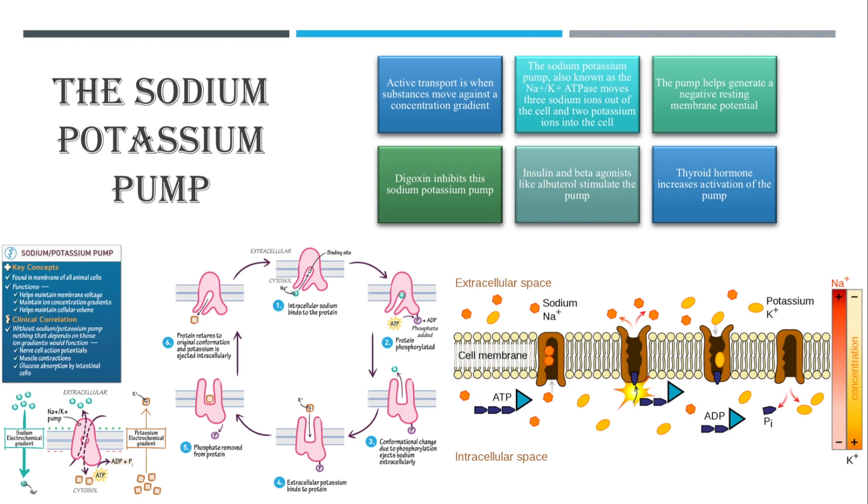In this situation we give insulin and glucose to fix the hyperkalemia. How this works is that the insulin we know will bring glucose inside of the cells, so we need to give glucose so we don't drop someone's blood sugar too low. But insulin also activates the sodium potassium pump to bring potassium from outside the cell to inside the cell.